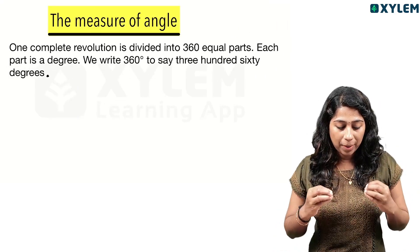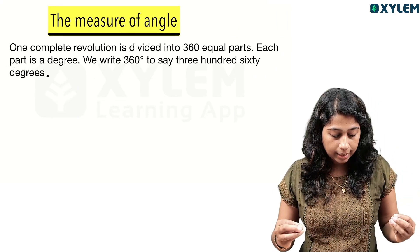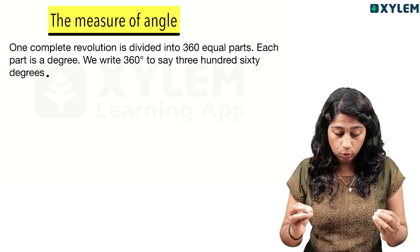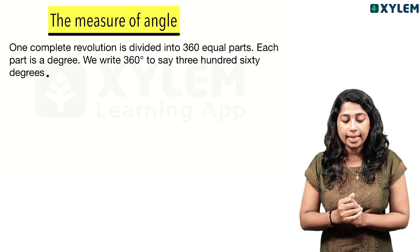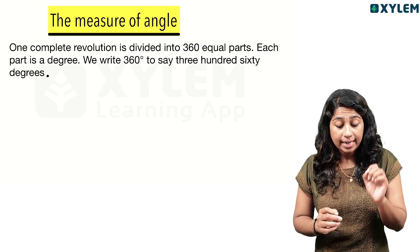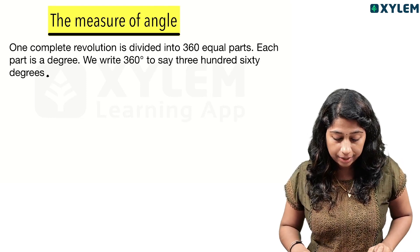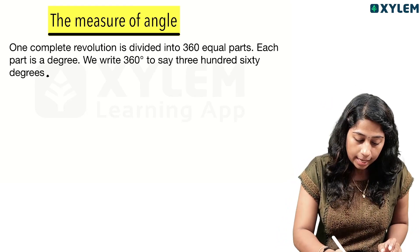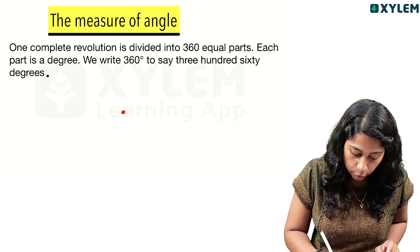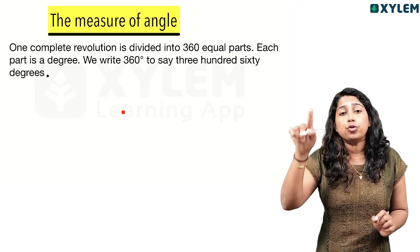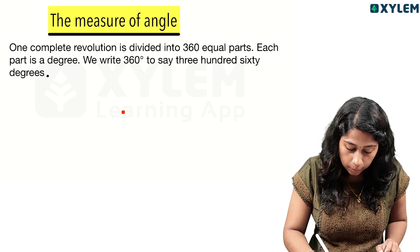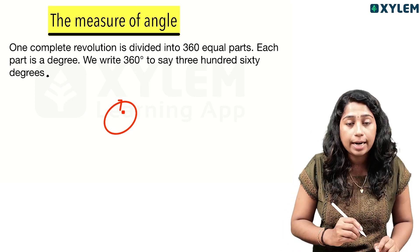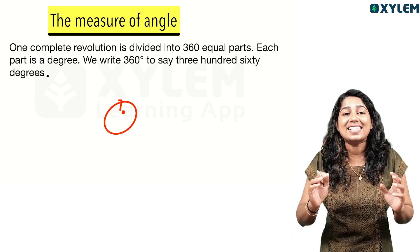The measure of an angle: one complete revolution is divided into 360 equal parts. Each part is called a degree. We write 360 with the degree symbol to say 360 degrees. If you make a point and rotate around it completely, that angle is 360 degrees.